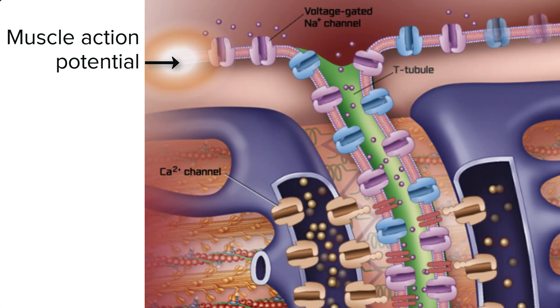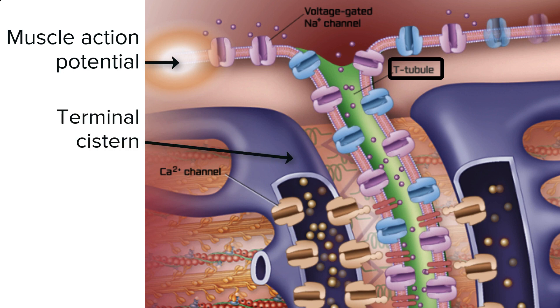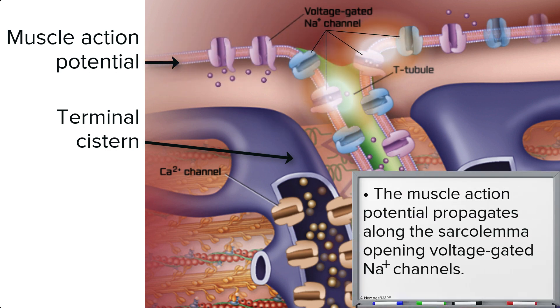When an action potential reaches a transverse tubule, or T-tubule, it follows the T-tubule's path running adjacent to a terminal cistern of the sarcoplasm, all the while continuing to stimulate the opening of voltage-gated ion channels, propagating this muscle action potential all along the sarcolemma.